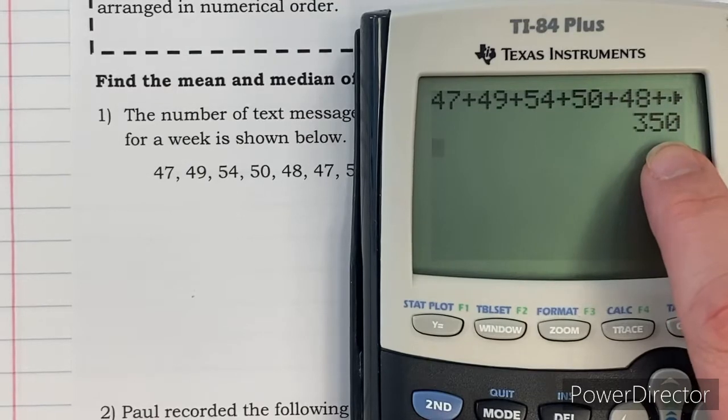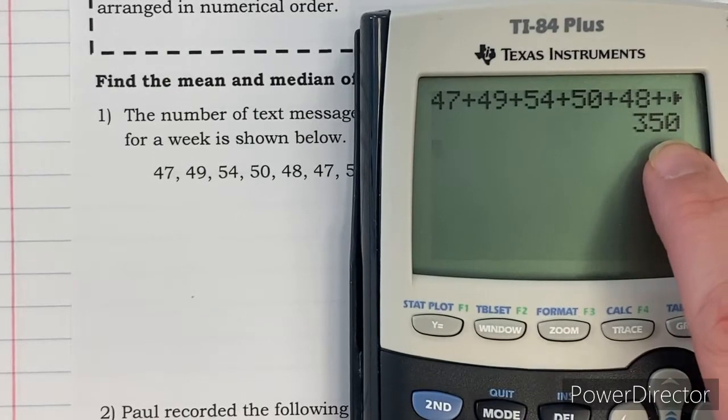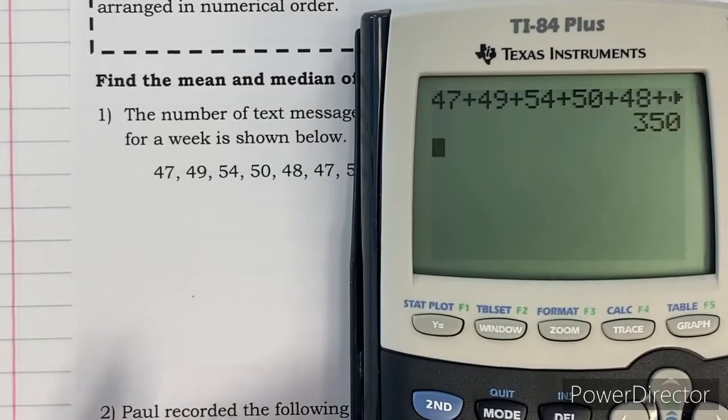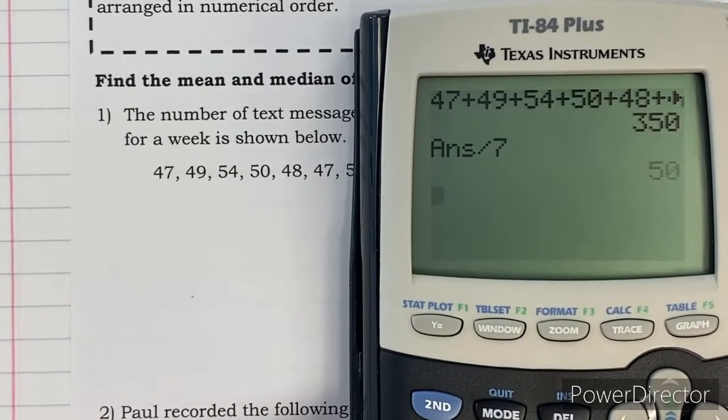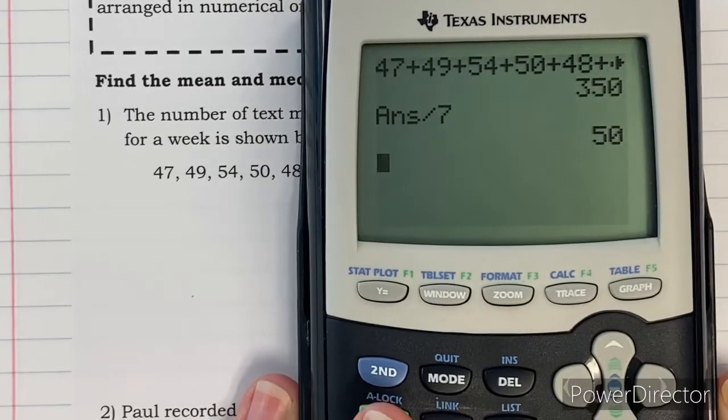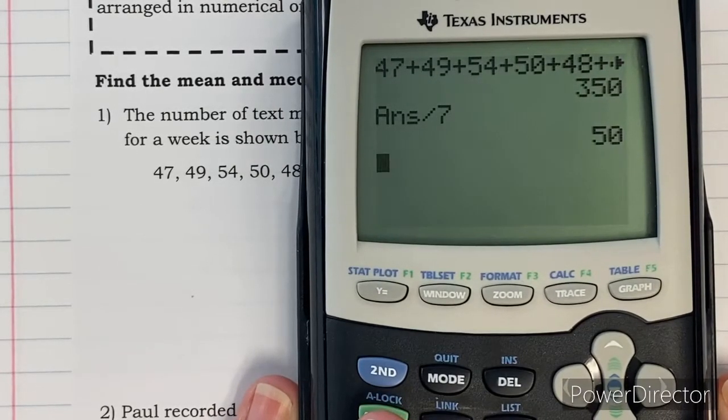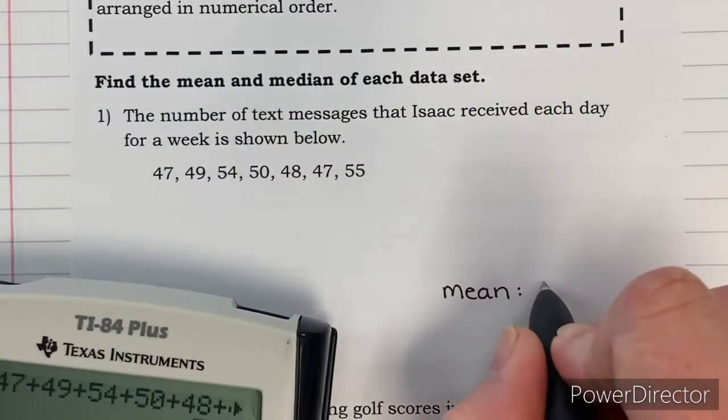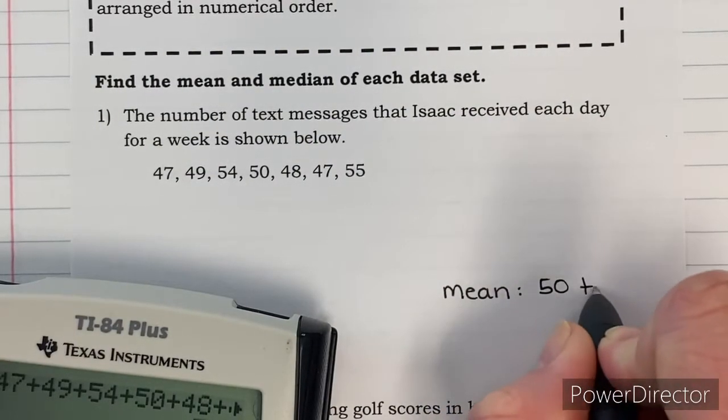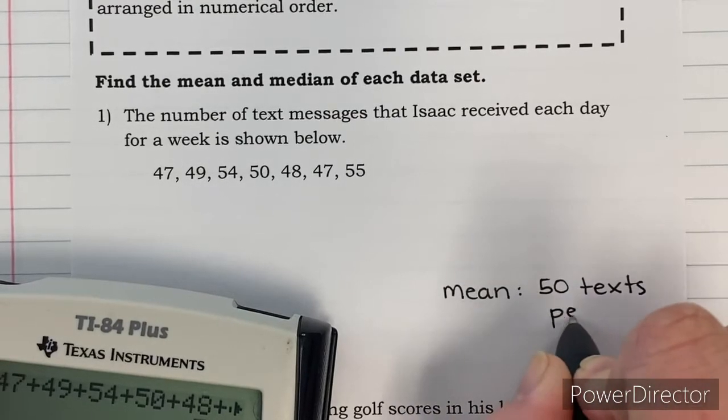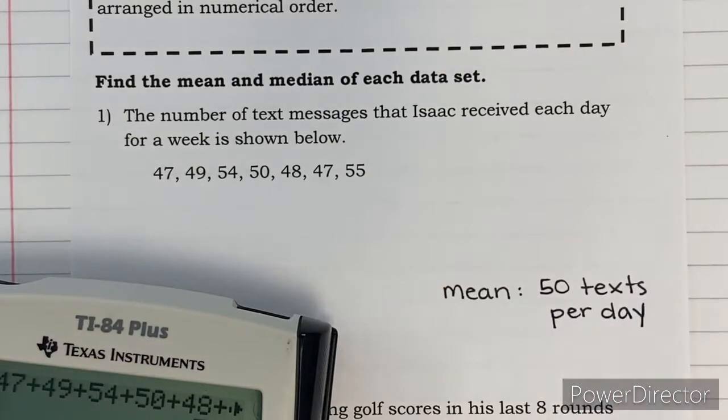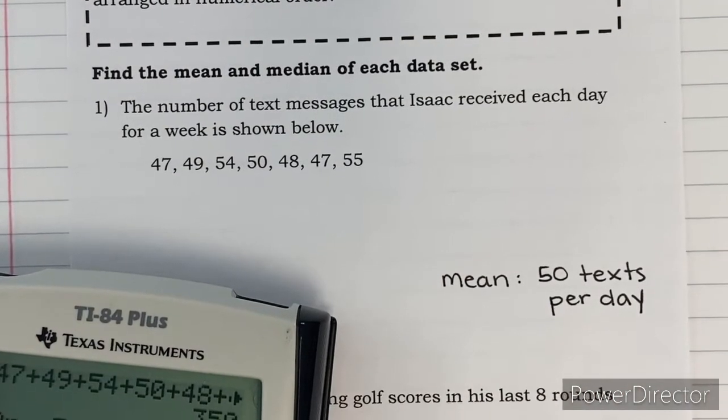So I have it all typed in. This is how many texts that he has sent or received in one week. He had 350 text messages sent to him. So now the only thing left to do is just to divide that by seven and that's how many he receives in a day on average. Our mean or average is 50 texts per day. Super simple.